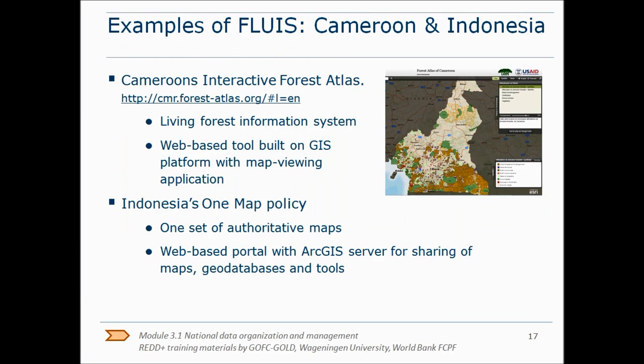Examples of a FLUIS are Cameroon's Interactive Forest Atlas and Indonesia's OneMap policy. These are both web-based portals with built-in GIS servers where you can view different available maps. Agencies can use these portals to share maps, geo-databases, and tools. This is a great support for forest management and land use planning.